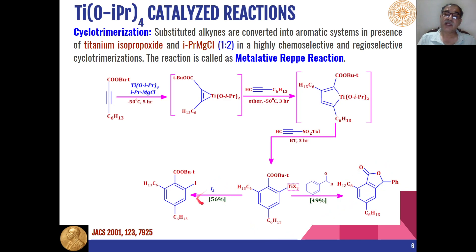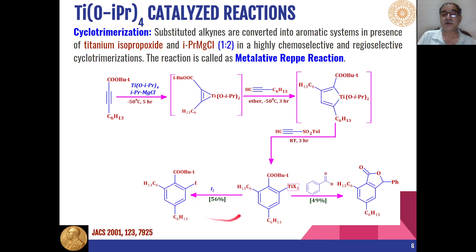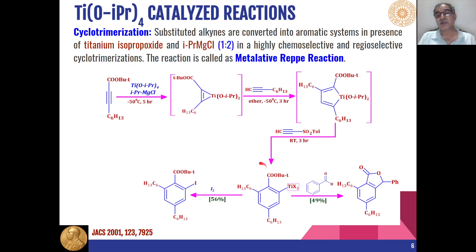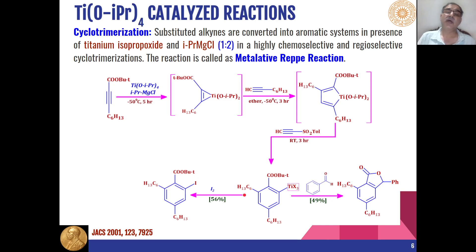This titanium eta-3 complex can react with different electrophilic molecules to give different products. When it reacts with carbonyl compounds, lactones are formed. When it reacts with iodine, iodo compounds are formed. Titanium tetra-isopropoxide is thus very efficient in organic synthesis through cyclotrimerization of alkynes, and this type of cyclotrimerization is called the Reppe reaction. The reaction is highly chemoselective and regioselective in nature.